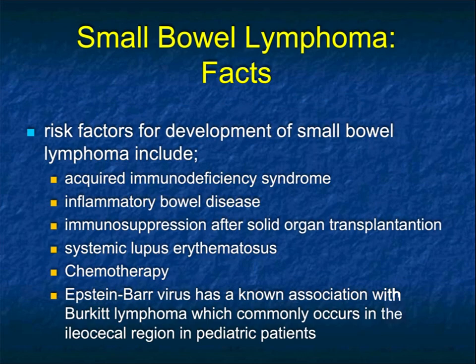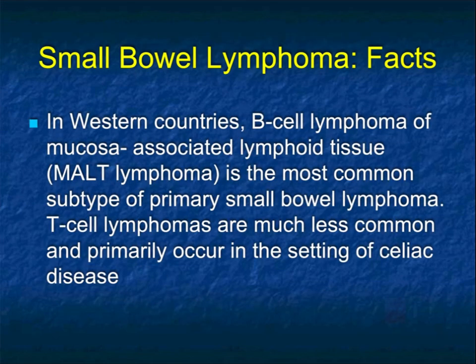Some of the risk factors for lymphoma include patients with AIDS, IBD, immunosuppression after organ transplantation, patients with lupus, post-chemotherapy, and Epstein-Barr virus. In Western countries, B-cell lymphoma of mucosa-associated lymphoid tissue, so-called MALT lymphoma, is the most common subtype of primary small bowel lymphoma.